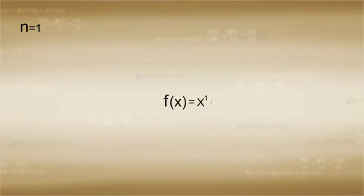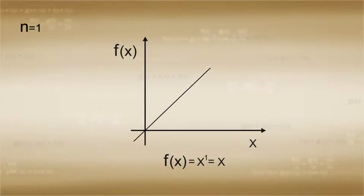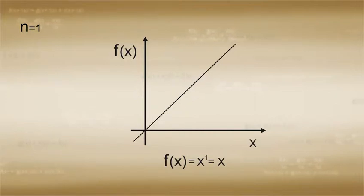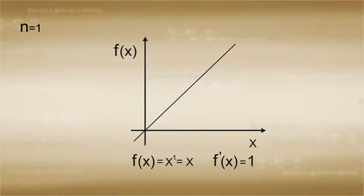If we start our examination at n equal to 1, then we have to find the derivative of a function f equal to x. We know that this function represents a graph that intersects the origin and slopes up one unit for each unit of horizontal traversal. For this reason, we know that the derivative of this function is equal to 1. For our purposes, the graph itself would actually be misleading, as the graph represents the value of f at various values of x.